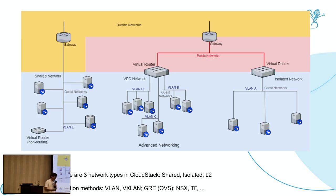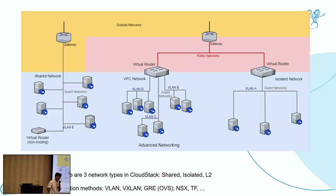There are several isolation methods in CloudStack, which refer to different implementations in the backend. For example, VLAN and VXLAN mean the backend uses a Linux bridge. GRE means Open vSwitch is used on KVM hosts. There are also some other isolation methods for SDN solutions, for example NSX, which means VMware NSX, and TF, which means Tungsten Fabric.